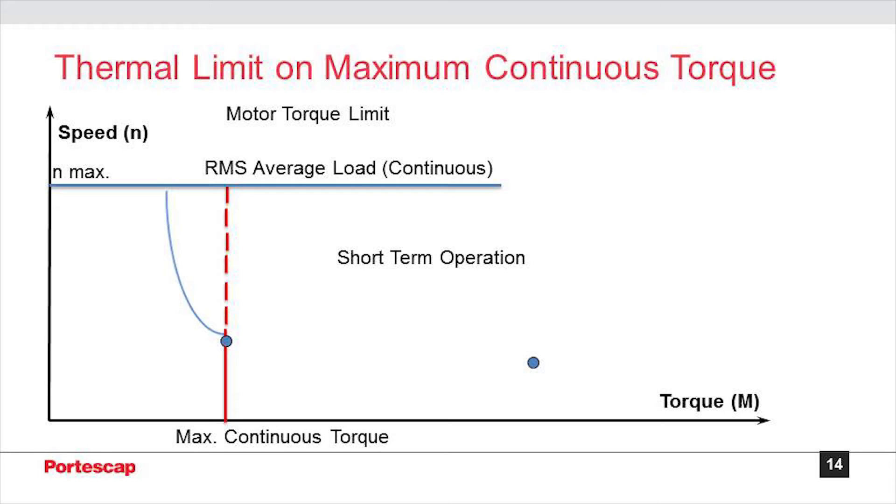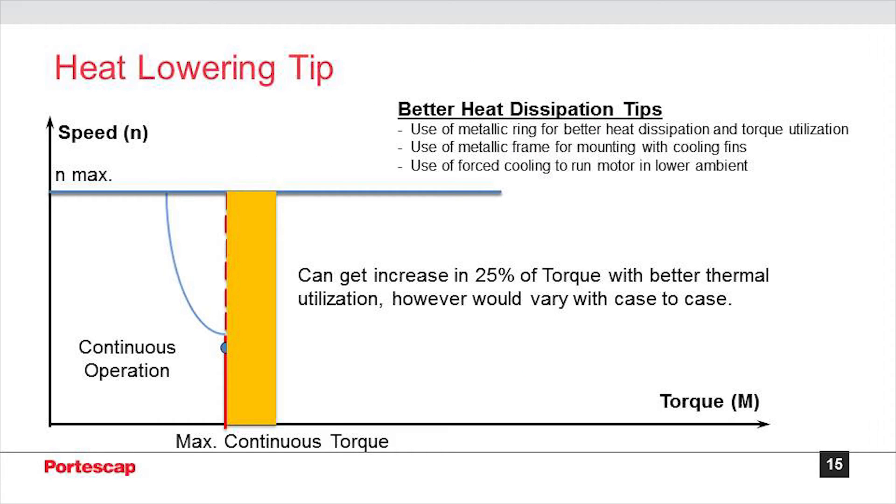Up to this limit, the motor can be continuously loaded without overheating the motor or its windings. Thermal capability of the motor can be enhanced by a few means as shown in the slide. By this, we can improve the heat dissipation of the motor so the continuous operating range for torque can be extended to some higher value, maybe around 25% more than the recommended max continuous torque value as seen in the catalog.